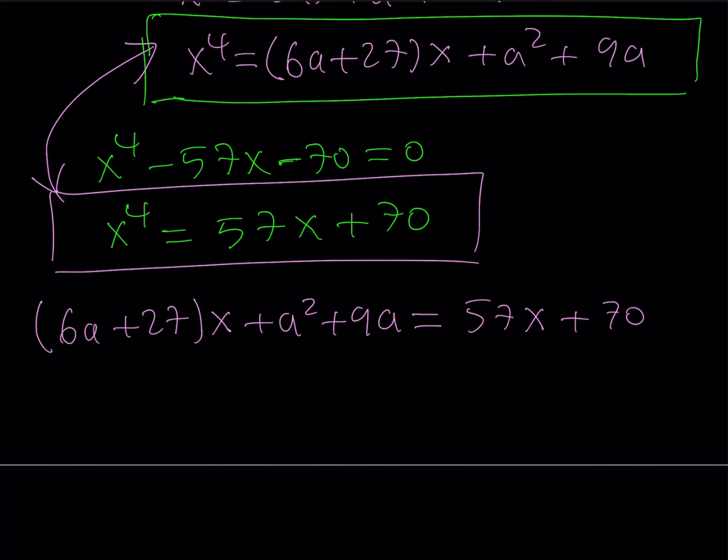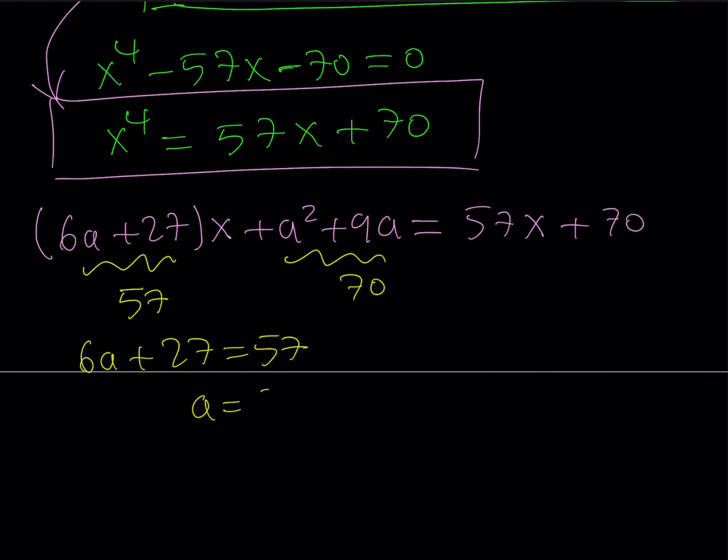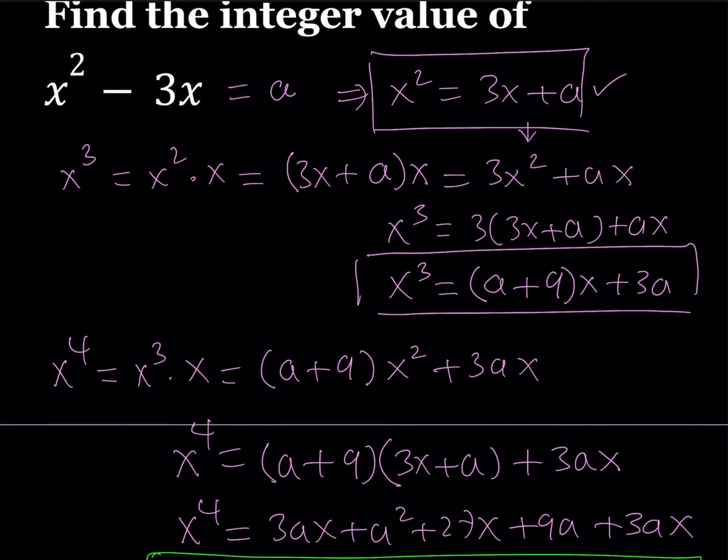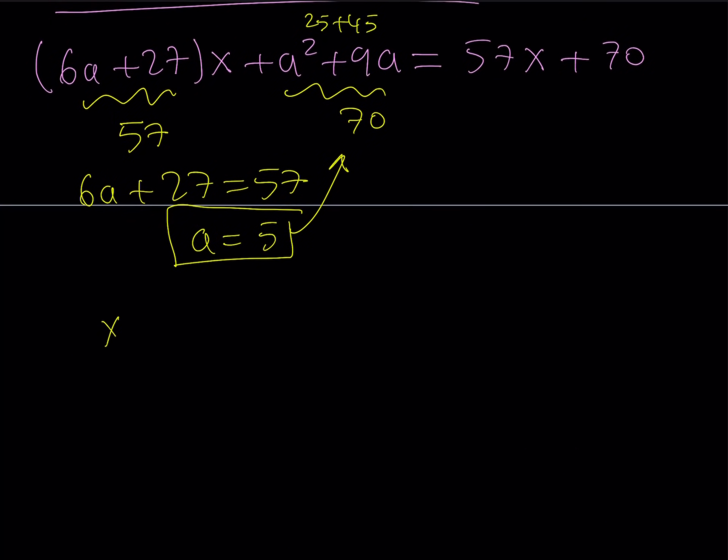Now, what does that equality tell you? These are polynomials that are always equal for all values of x. It means that the coefficient of x here is 57, because it's 57 on the right-hand side, and the constant term is supposed to be 70. But even the first equation gives you what you need, and we just need to check that with the second one. From here, we get 6a = 30, and a = 5. And if you go ahead and plug in a = 5 here, you're going to notice that we get 25 + 45, which gives us 70. So we get the same a value, which is verified. And if you remember, a was x² - 3x, and we're supposed to find the integer value of this expression, right? And we found the a value, so we found the answer. So x² - 3x = 5 then. And this concludes the first method.